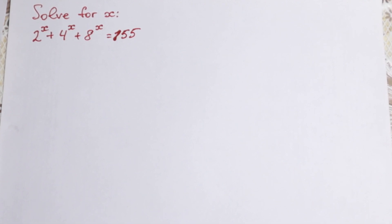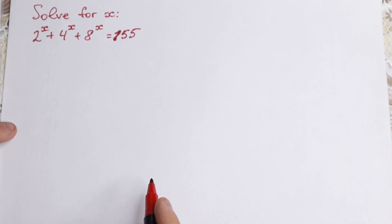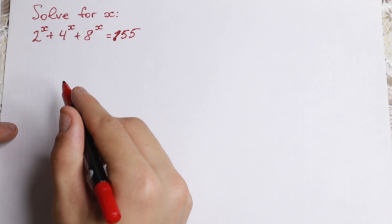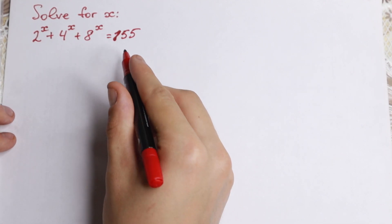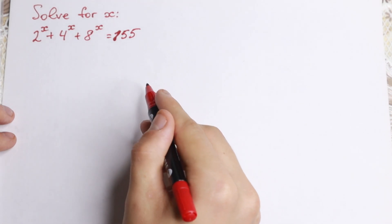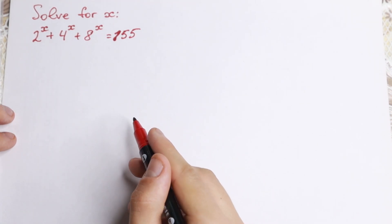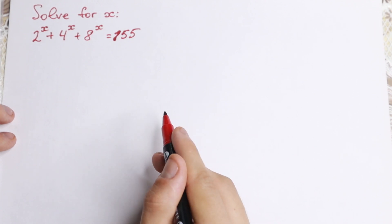Hello everyone! Happy to see you here. We have a really interesting exponential equation today: 2 to the x plus 4 to the x plus 8 to the x equals 155, and we need to find x from this equation.